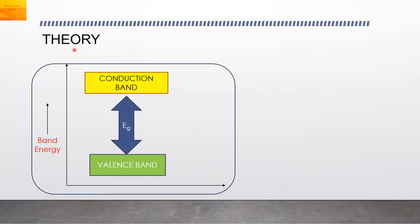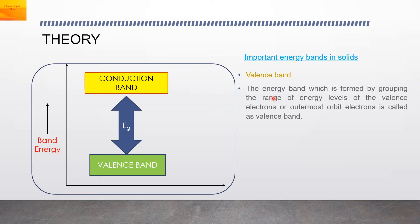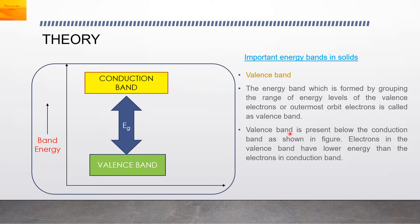We will see the theory. The important energy bands in solids are, first, the valence band. The energy band which is formed by grouping the range of energy levels of the valence electrons or outermost orbit electrons is called the valence band. Valence band is present below the conduction band as shown in the figure. The electrons in the valence band have lower energy than the electrons in the conduction band. The electrons present in the valence band are loosely bound to the nucleus of the atom.